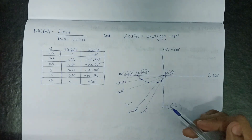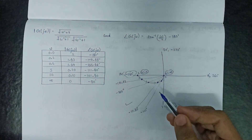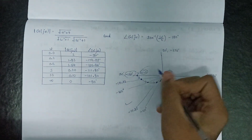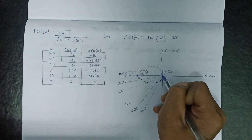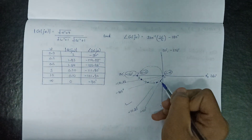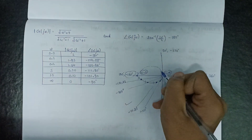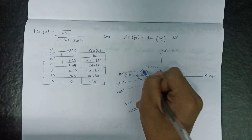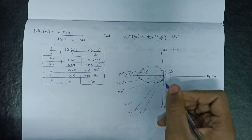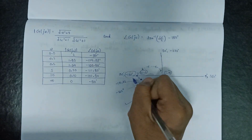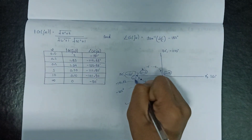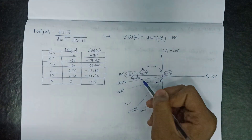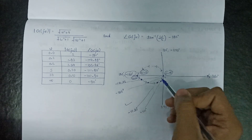Since the Nyquist plot is the mirror image of the polar plot, the Nyquist plot has the same shape. The direction the polar plot follows is the same as that of the Nyquist plot — anticlockwise. Both 0⁺ and 0⁻ lie at magnitude 2, giving us the complete Nyquist plot.